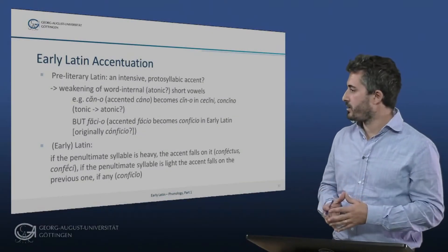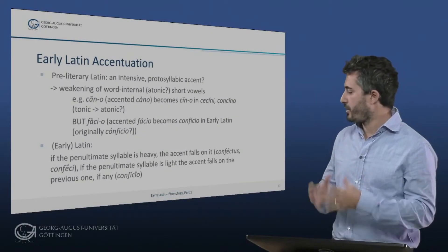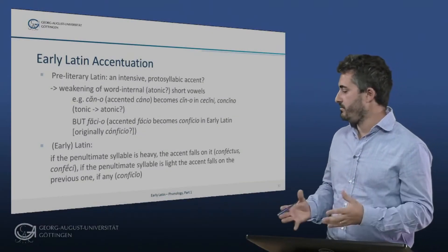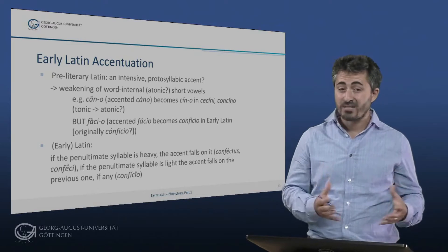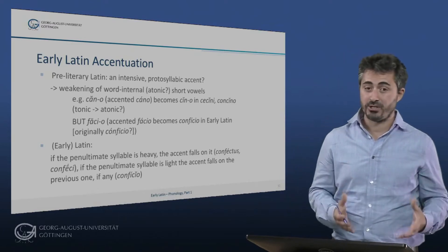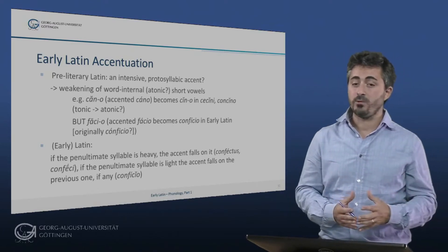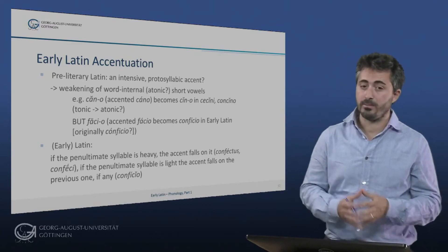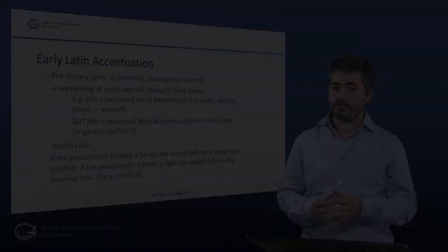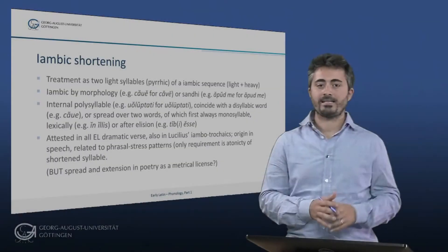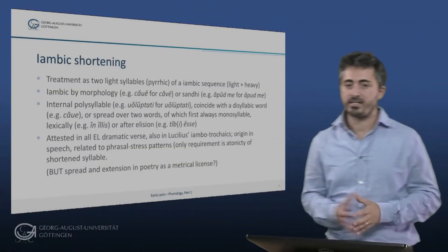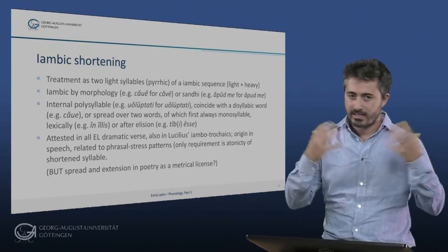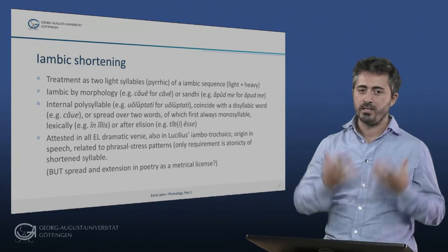In the pre-literary period, before the third century BC, it is possible that the accent was intensive in nature and it was always placed on the first syllable of the word. Accentual factors are also present in one of the most intriguing and mysterious phenomena of early Latin prosody